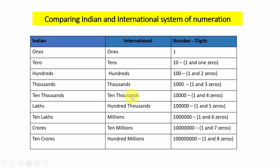Up to five digits, numbers are written in the same way in the Indian and international place value systems. Numbers with six digits or more have different number names in the two systems. In the Indian system it is called lakhs; in the international system it is called hundred thousand. A seven digit number is called ten lakhs in Indian system and one million in international system. An eight digit number is called crores in Indian system and ten millions in international system. This means one lakh equals hundred thousand, ten lakhs equals one million, one crore equals ten millions.